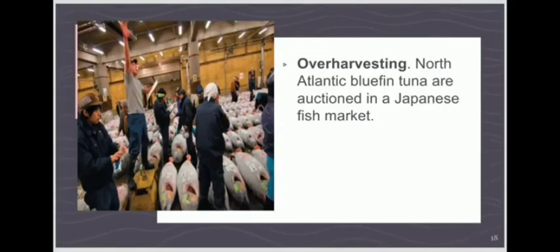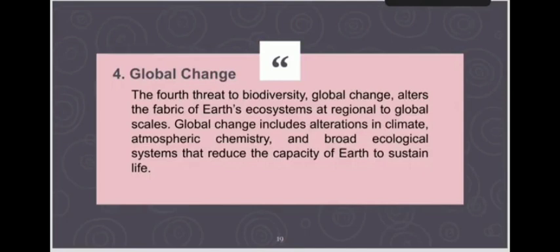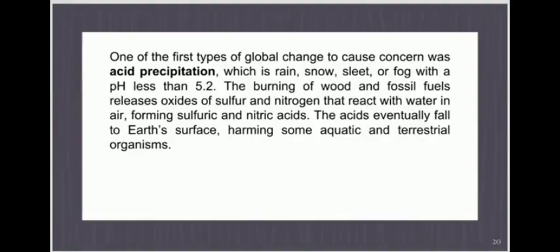Another example of over-harvesting is North Atlantic bluefin tuna auctioned in Japanese fish markets. The fourth threat to biodiversity is global change, which alters Earth's ecosystems at regional to global scales. Global change includes alterations in climate, atmospheric chemistry, and broad ecological systems that reduce Earth's capacity to sustain life. One of the first types to cause concern was acid precipitation — rain, snow, sleet, or fog with pH less than 5.2 — caused by burning wood and fossil fuels that release oxides of sulfur and nitrogen.